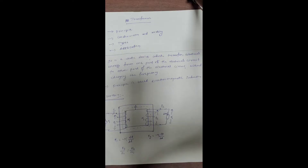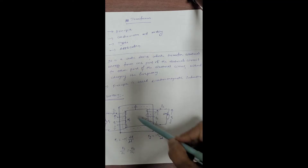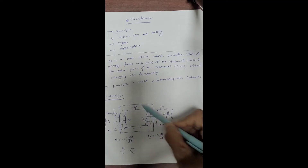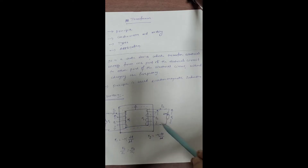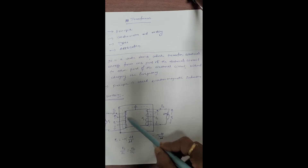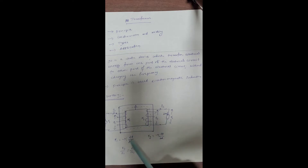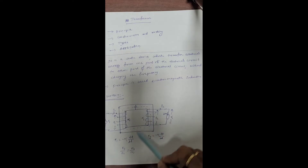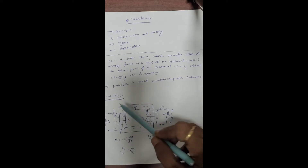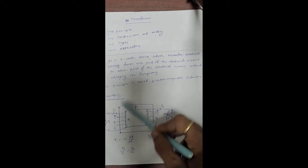Coming to the working principle: there is a common core with two windings — primary and secondary — with number of turns N1 and N2. Whenever alternating voltage is given to the primary winding, an alternating magnetic flux will set up in the core. This alternating magnetic flux links in both circuits and induces EMF E1 and E2 as per Faraday's law of electromagnetic induction. The rate of change of magnetic flux is directly proportional to EMF.